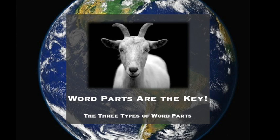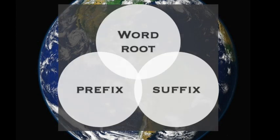When learning a new medical term, it's important to break it apart and learn the different parts of the term. Medical terms should have at least two parts, but some may include up to three. The very beginning of a medical term is called a prefix. The middle is known as the word root, and the end is known as the suffix.